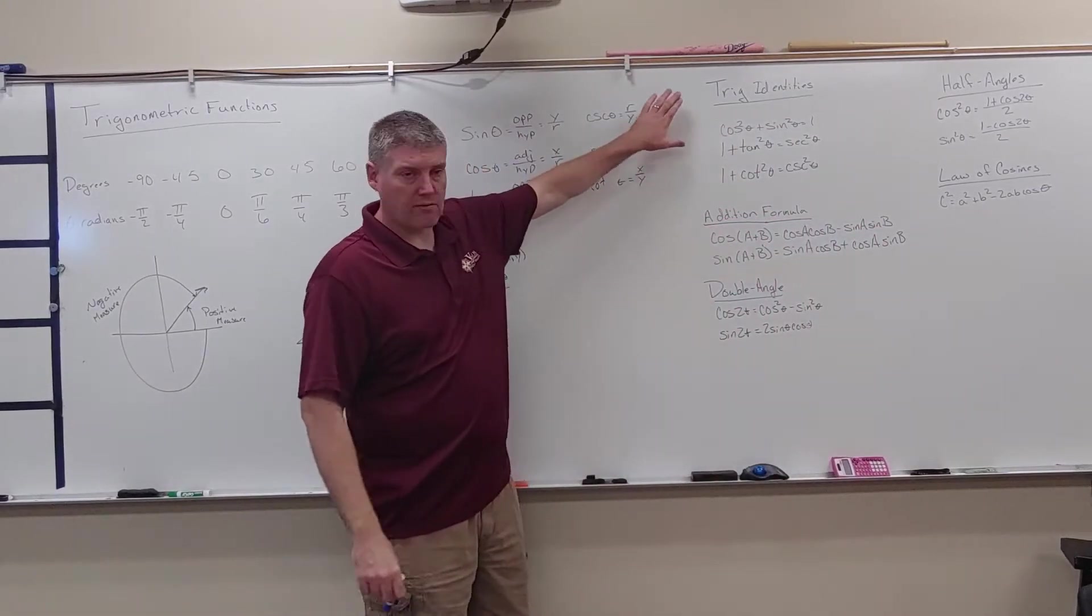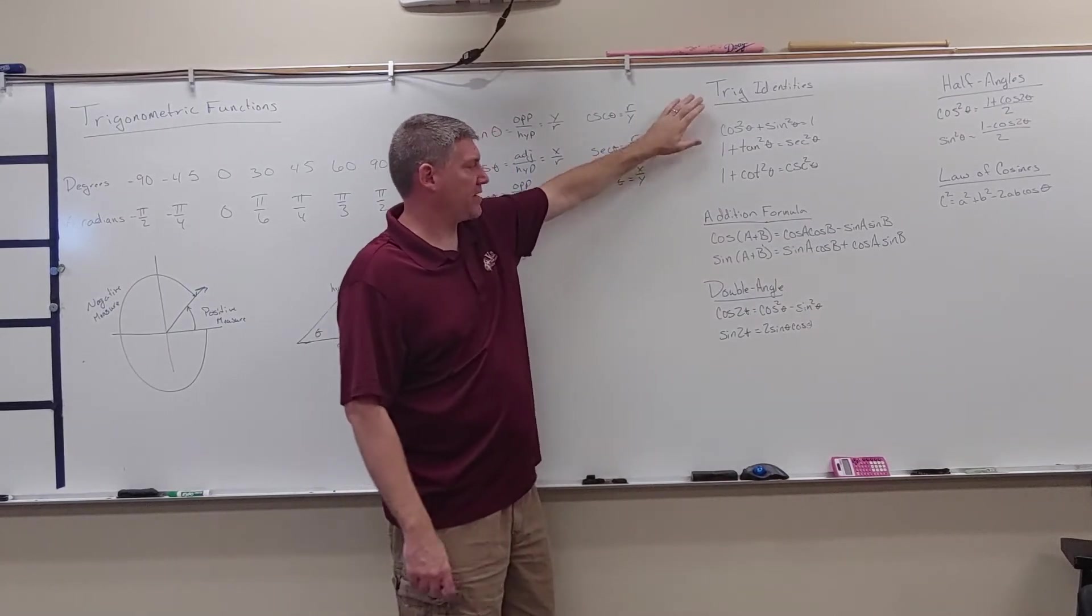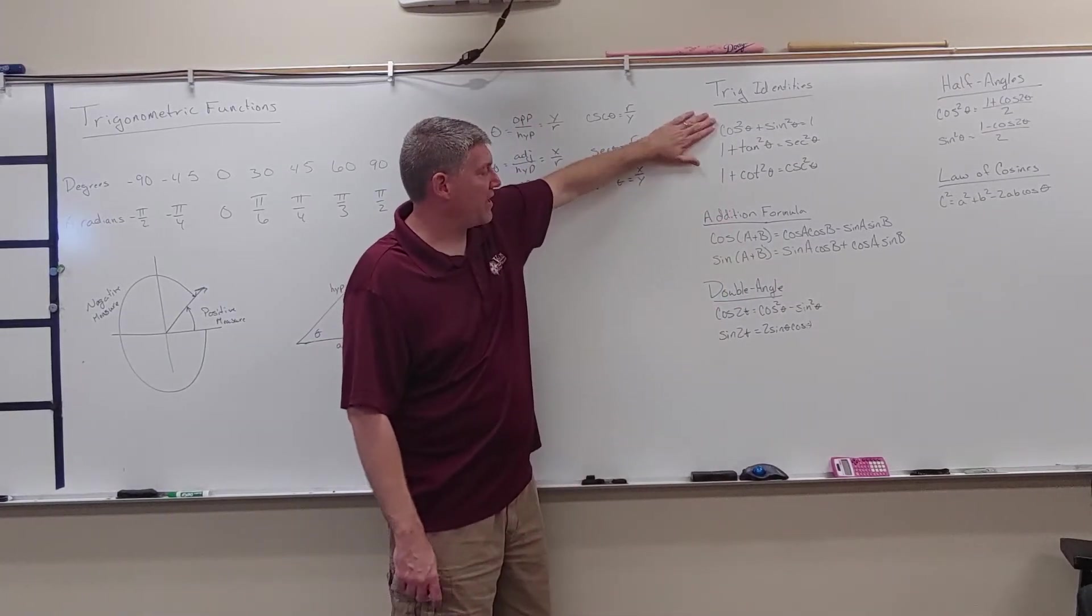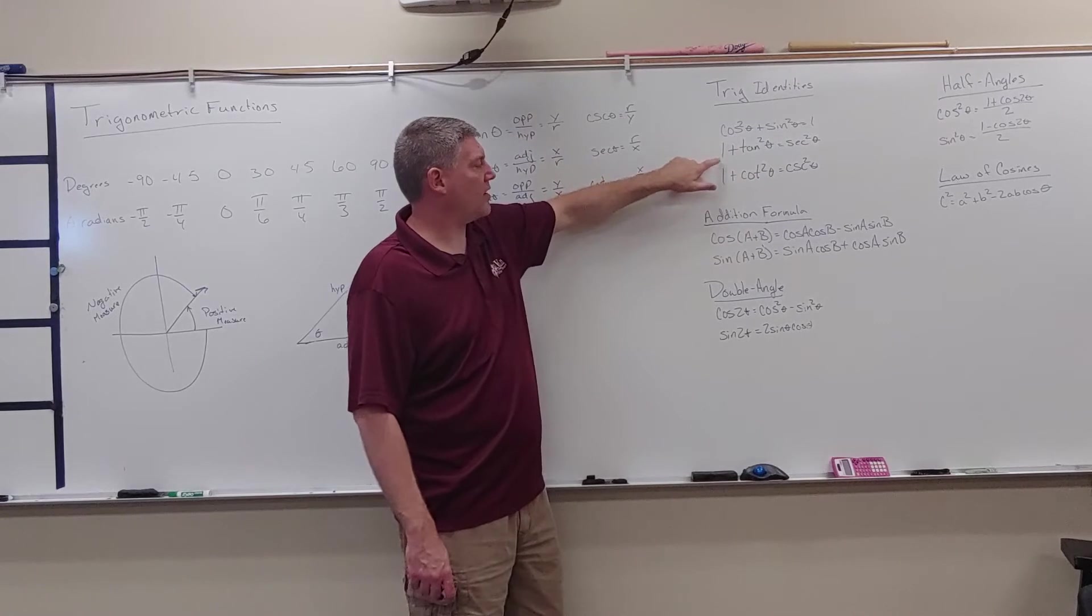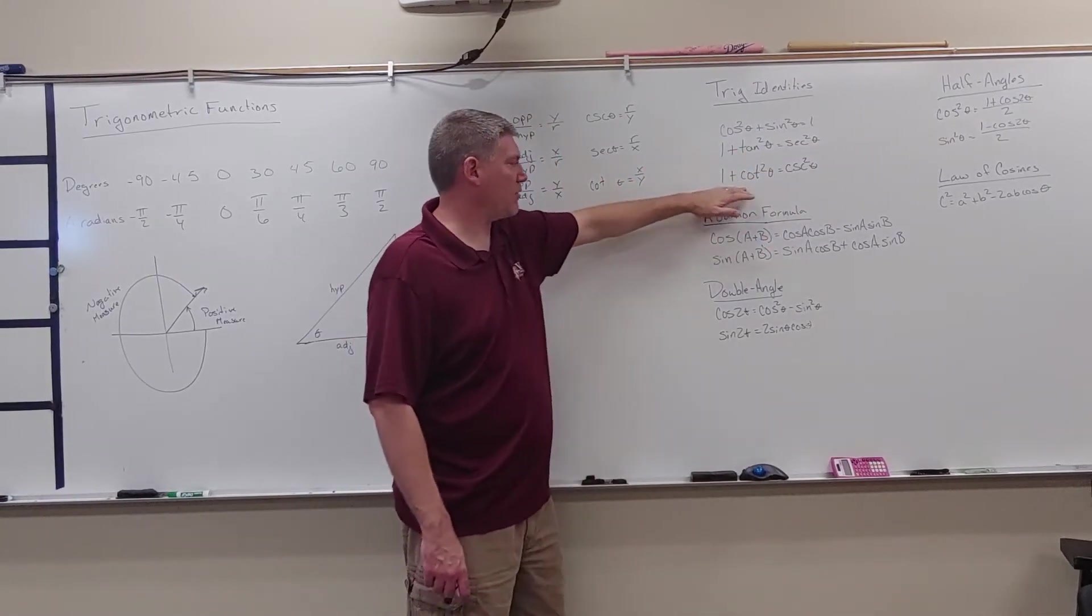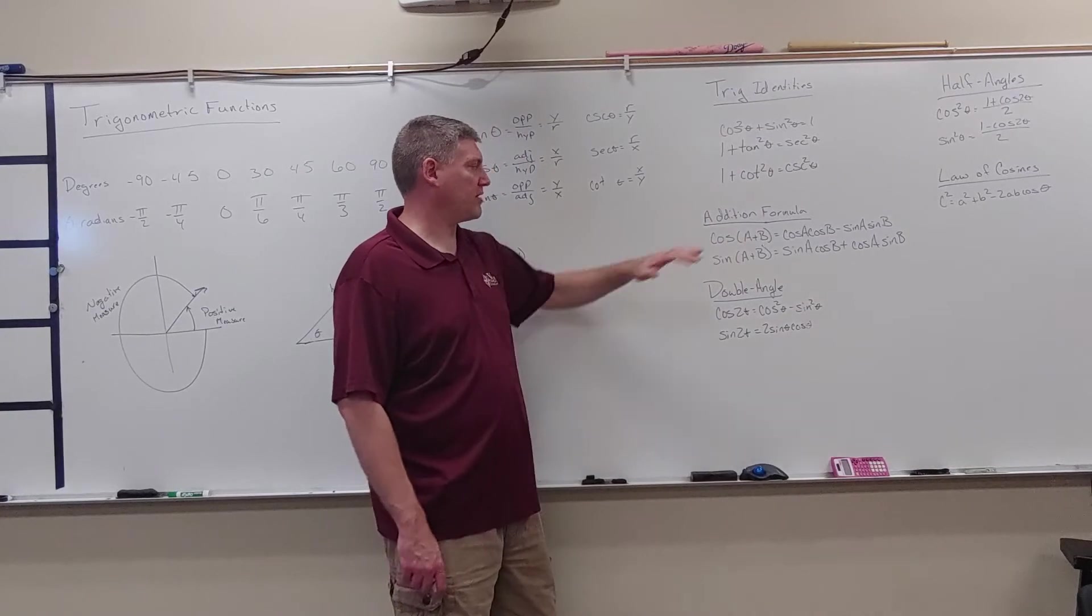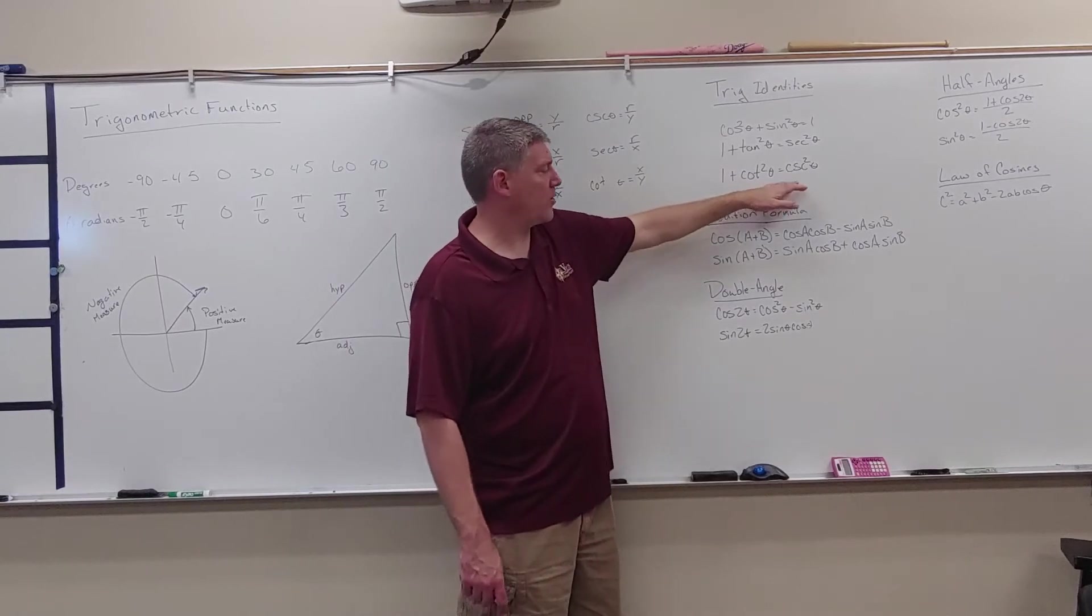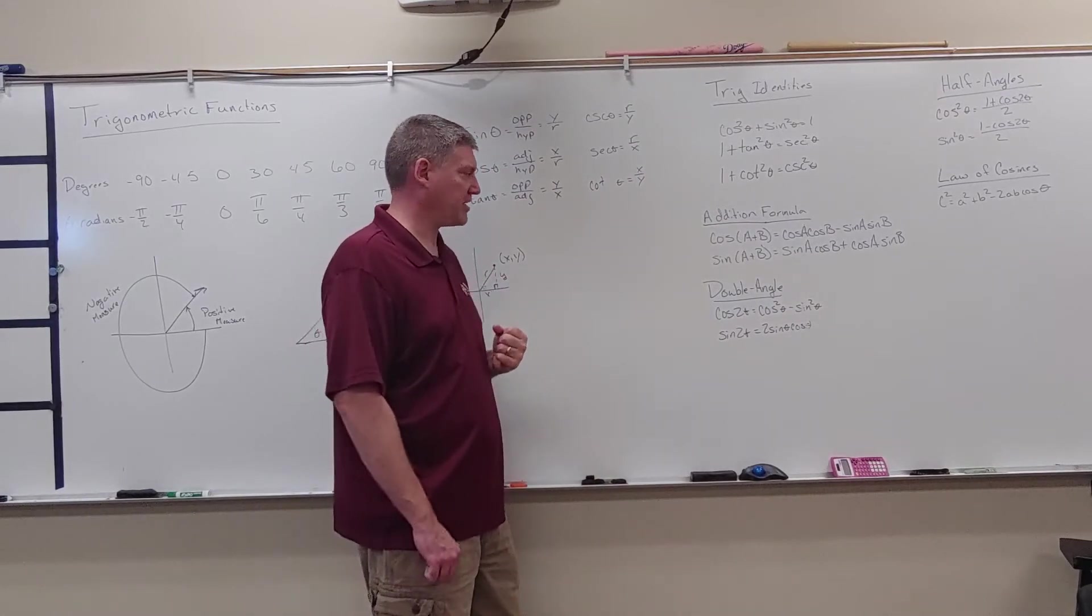We also want to just remember our trig identities. The one that we have here is the Pythagorean identity: cosine squared plus sine squared equals 1. These other two are based off of this. In this first one, I'm dividing everything by cosine squared, so I have 1 plus tangent squared equals secant squared. And then this one would be if I divided everything by sine squared, with a little bit of manipulation. This becomes 1 plus cotangent squared equals cosecant squared. And then we have all these formulas, these ways to change things around.